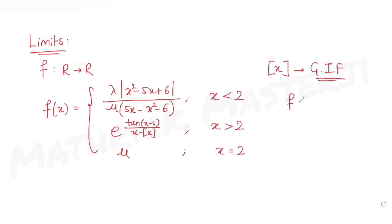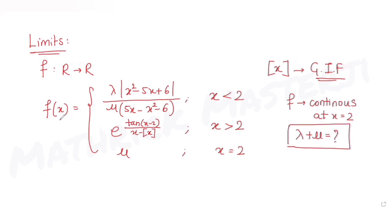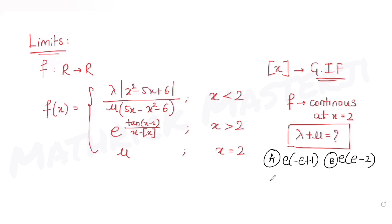The question also tells us that f is continuous at x = 2. We need to find the value of λ + μ. The answer choices given are: (a) e(−e + 1), (b) e, (c) e − 2, (d) 1, and (e) 2e − 1.